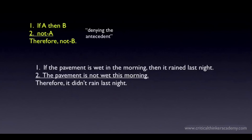If the pavement is wet in the morning, then it rained last night. The pavement is not wet this morning, therefore it didn't rain last night. It's not hard to see why this is invalid. It could have rained last night, but it stopped early and the rain on the pavement evaporated before morning. So clearly these premises don't guarantee the truth of the conclusion.